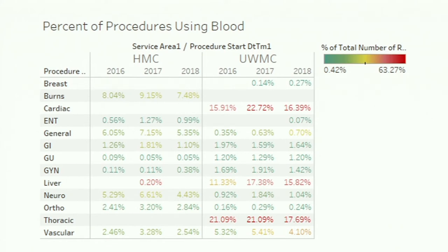The mix of important blood procedures at Harborview is different from UW. Obviously, we see a lot more trauma-related procedures, such as incision and drainage, burn surgeries, ortho categories such as fracture and spinal fusion. Then, what percent of these major blood procedures use blood products? We can see that cardiac, liver, and thoracic — like lung transplants — tend to use blood the most frequently. Between 15 to 22 percent — so one in six or one in four procedures — will use some form of transfusion during the procedure.